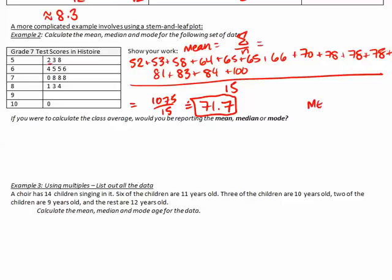To find the median, I again knock off or remove the first and the last, and keep removing them evenly. I see that the median mark is 78. Mode is the number that appears most often, and I see that the mode mark was also 78.